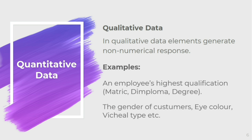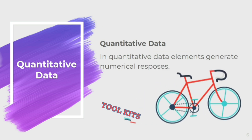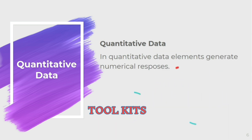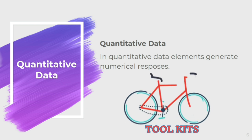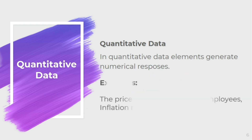In qualitative data, we usually count the responses to determine how many responses belong to each category, and then we use these responses for further analysis. Whereas in quantitative data, elements generate numeric responses — such as the price of products or the age of employees. These are examples of quantitative data.